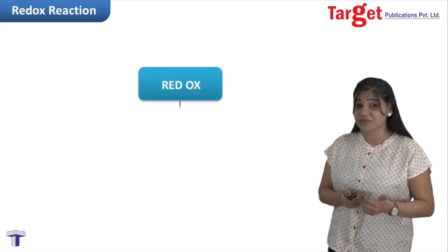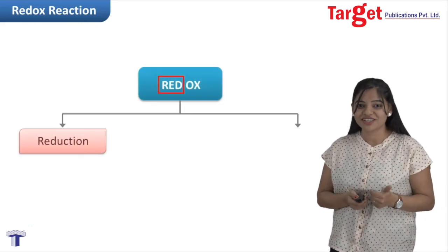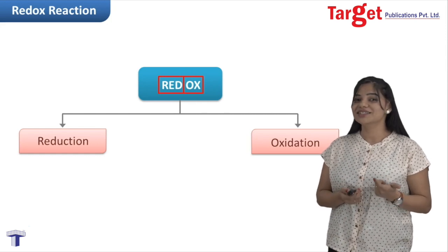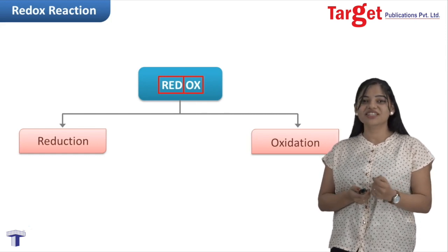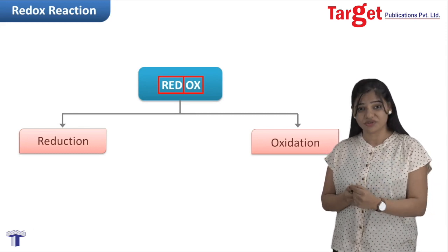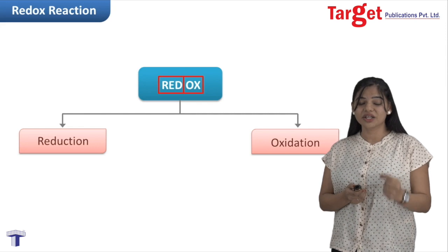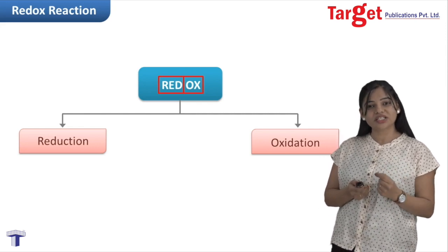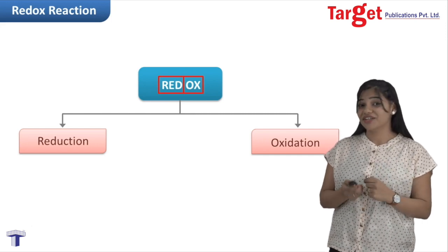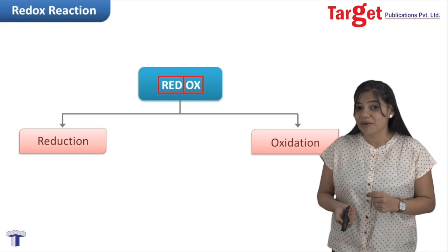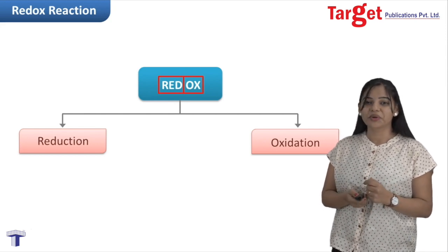To start with, the redox reaction term comes from 'red' meaning reduction and 'ox' meaning oxidation. To recollect: reduction is nothing but gain of electrons and oxidation is nothing but loss of electrons. Similarly, reducing agents themselves undergo oxidation and help something else get reduced, while oxidizing agents oxidize something else and themselves undergo reduction.